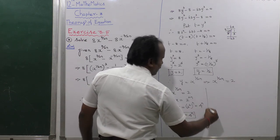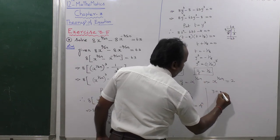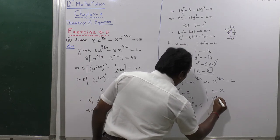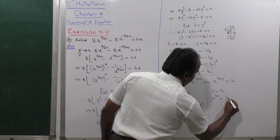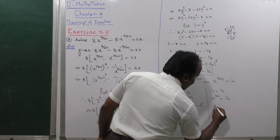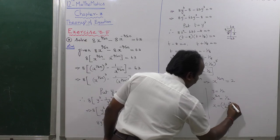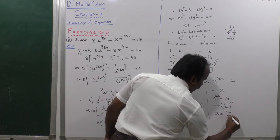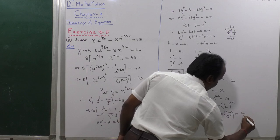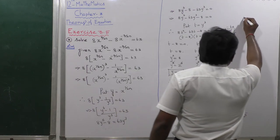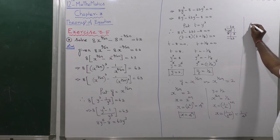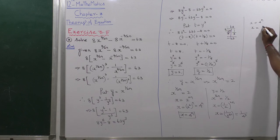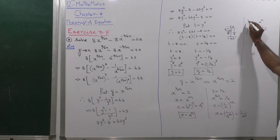The next case: y equals 1 by 2. Replacing y with x power 1 by 2n, we get x power 1 by 2n equals 1 by 2. Therefore x equals 1 divided by 2, the whole power 2n, which equals 1 divided by 2 power 2n, that is equal to 1 divided by 4 power n. So the solutions are x equals 4 power n and x equals 1 divided by 4 power n. That is the answer.